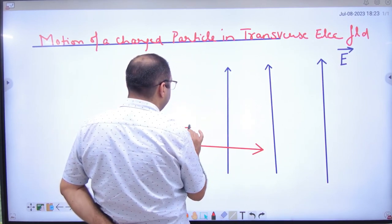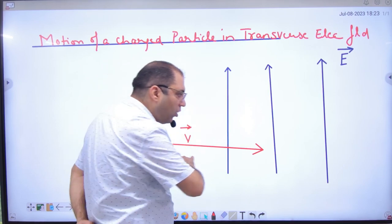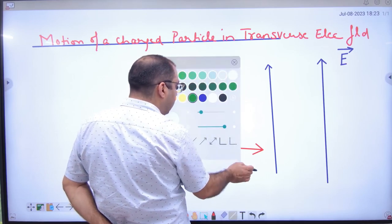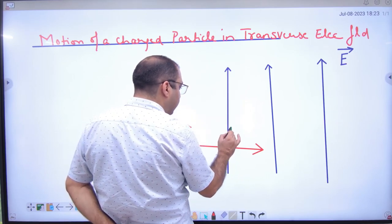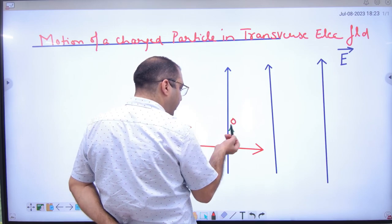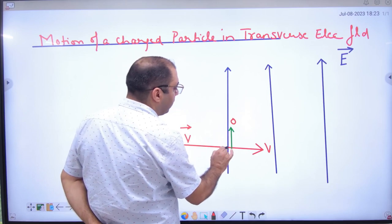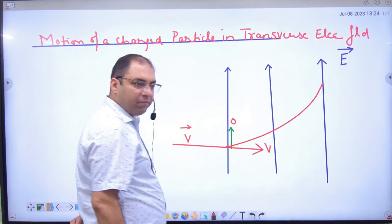Velocity is v-vector. How is it entering? Horizontally. So what will be the initial vertical velocity? Zero, because it didn't move like this. And what is the horizontal velocity? v. So we have to prove that what will be followed? Parabolic.